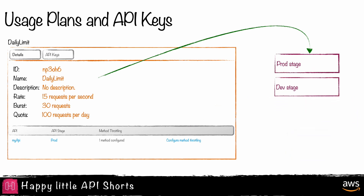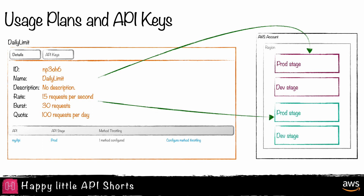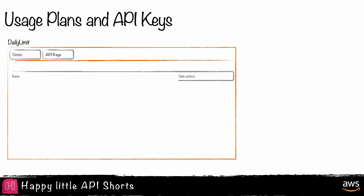Usage plans can be applied to multiple REST APIs within the same account and region. In the case of multiple APIs, the metering strategy is applied to the group as a whole.